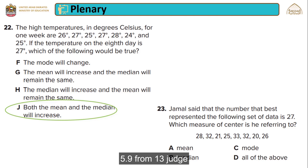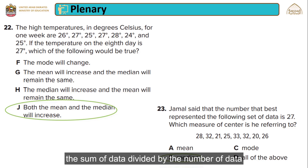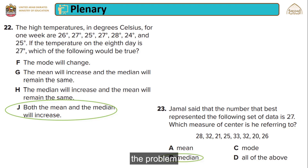Final question: Jamal said that the number that best represented the following set of data is 27. Which measure of center is he referring to? If we order the values from least to greatest, we find two values lying in the middle. Finding the mean of these two values gives the median, which is 27. So this represents the median.